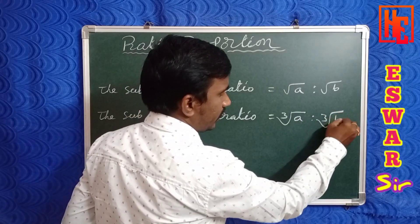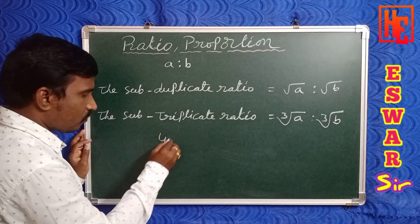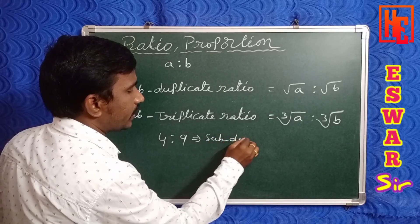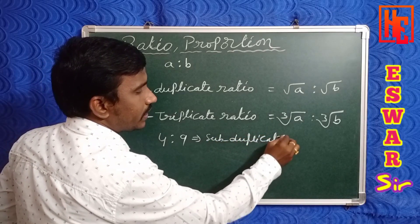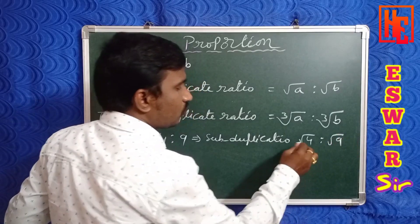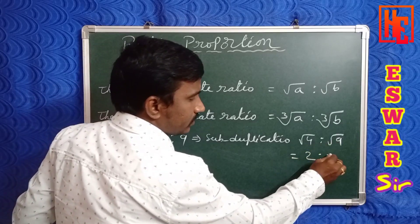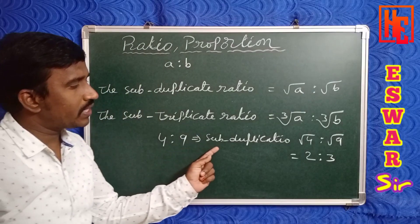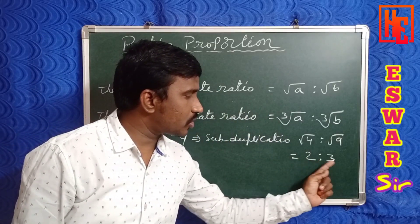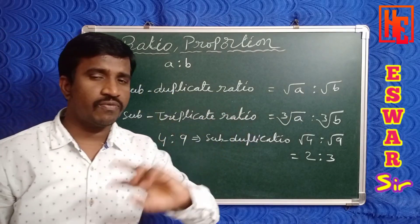For example, given 4 is to 9, find the sub-duplicate ratio. The sub-duplicate ratio of 4 is to 9 means √4 is to √9. The square root of 4 is 2, and the square root of 9 is 3, so the sub-duplicate ratio is 2 is to 3. Note: the duplicate ratio of 2 is to 3 is 4 is to 9, so duplicate and sub-duplicate ratios are inverses of each other.